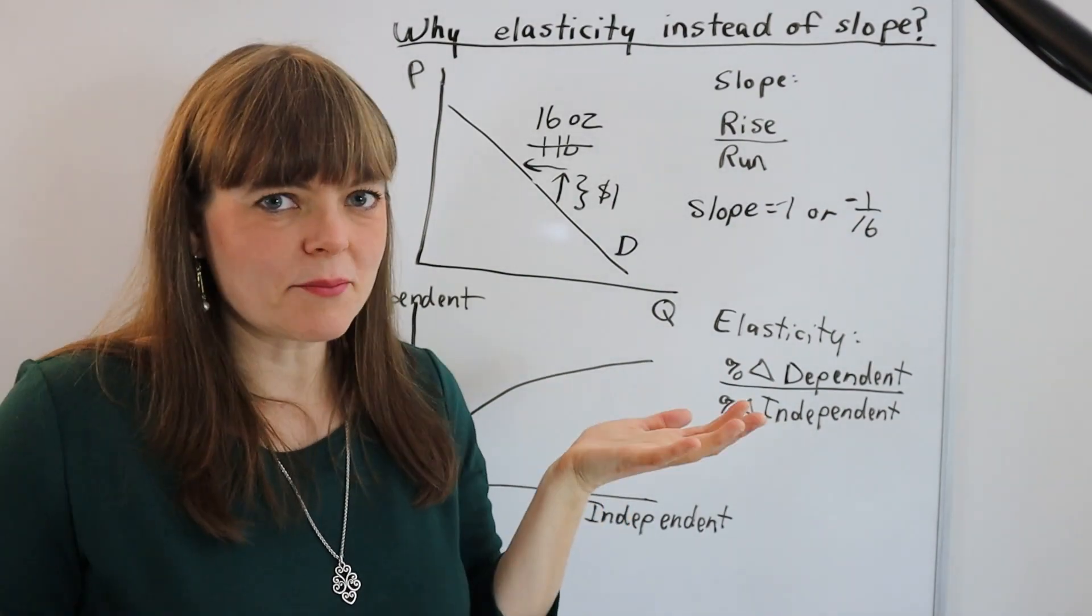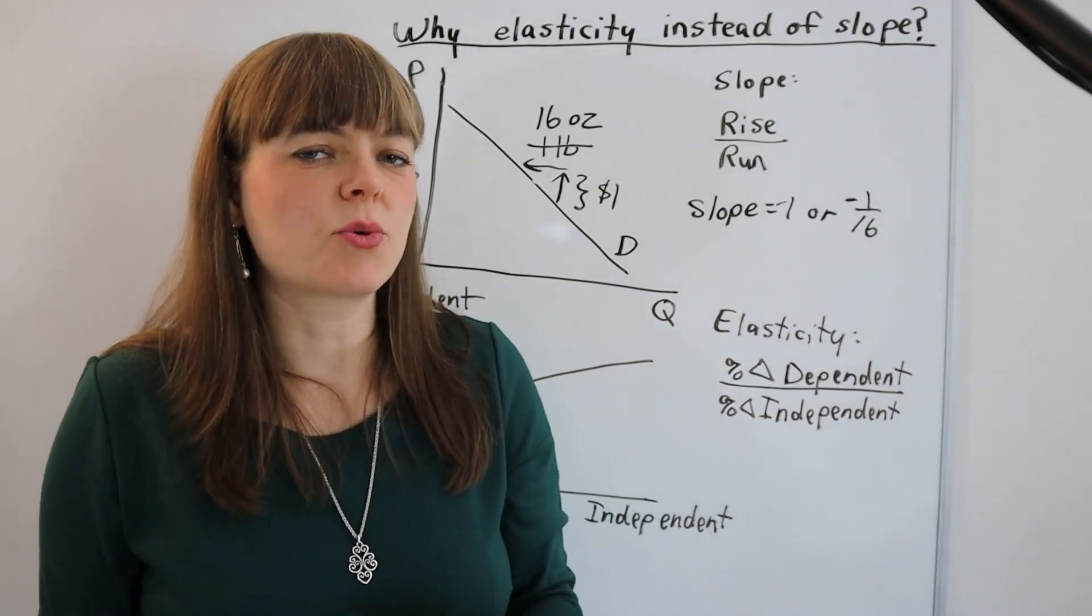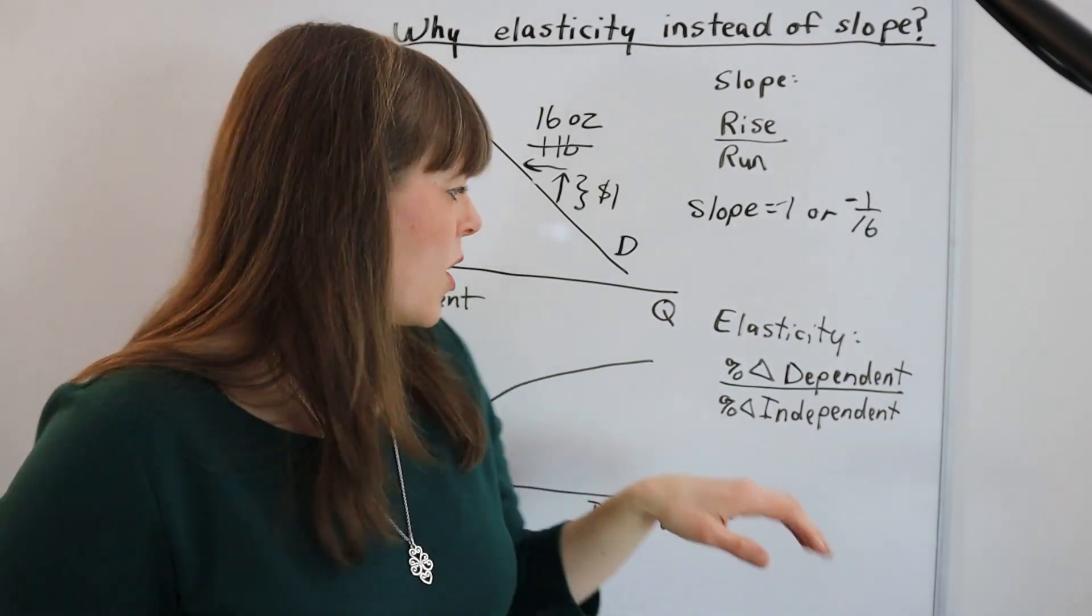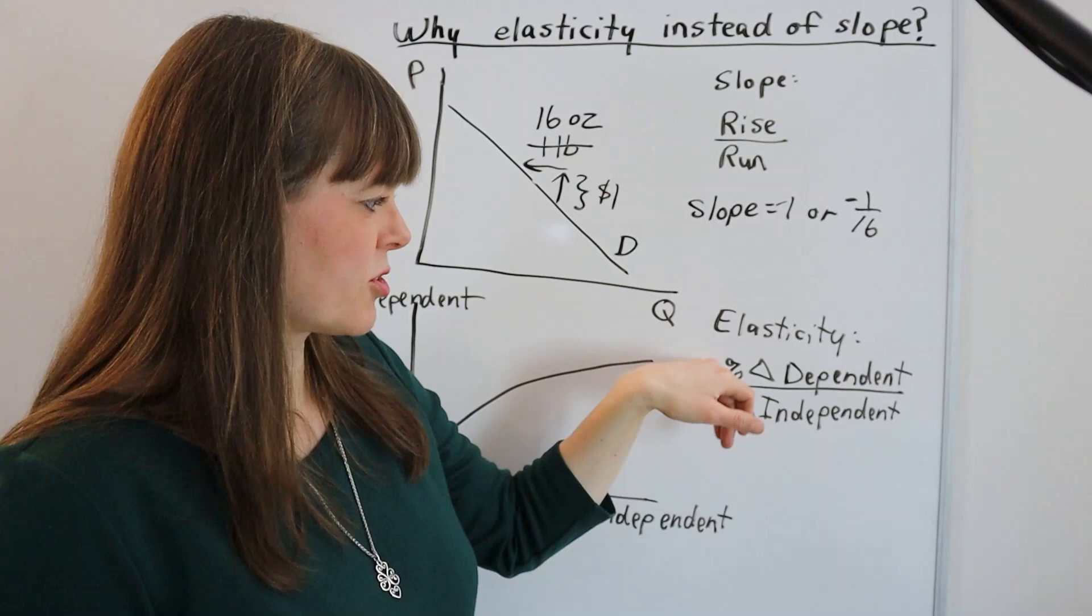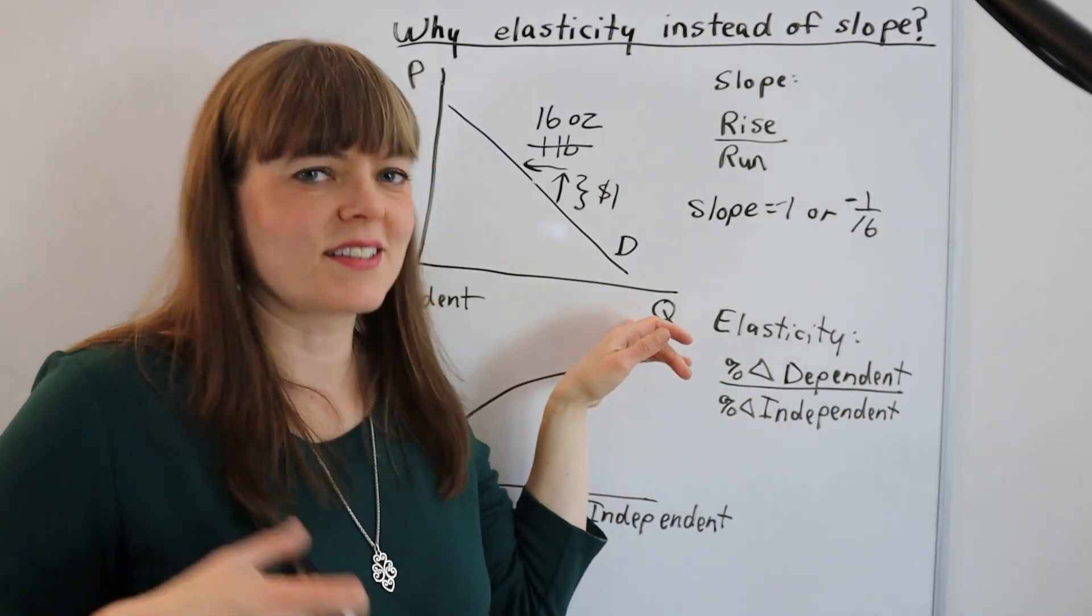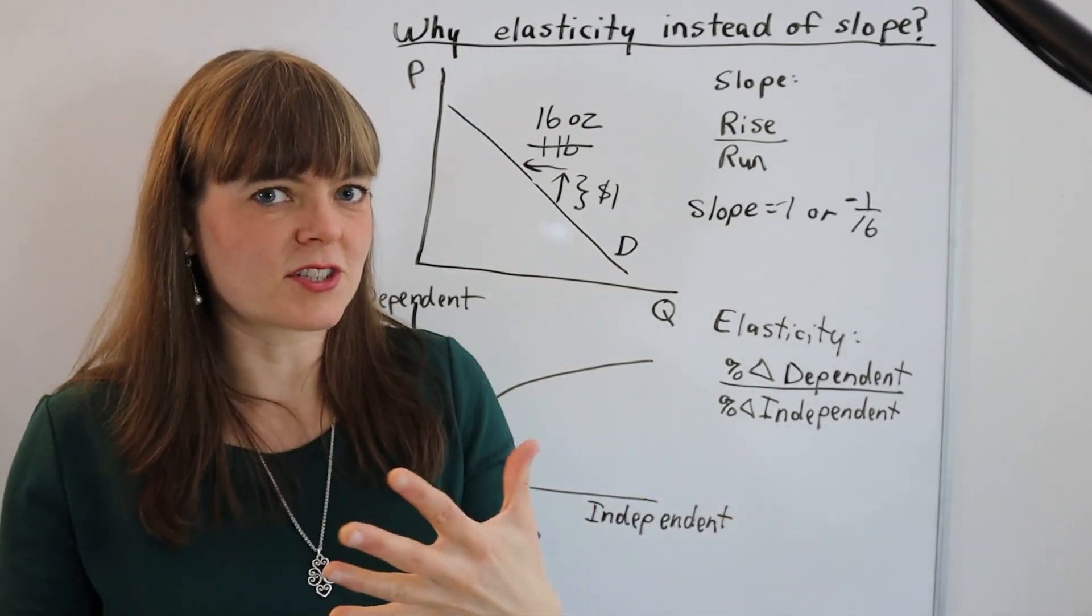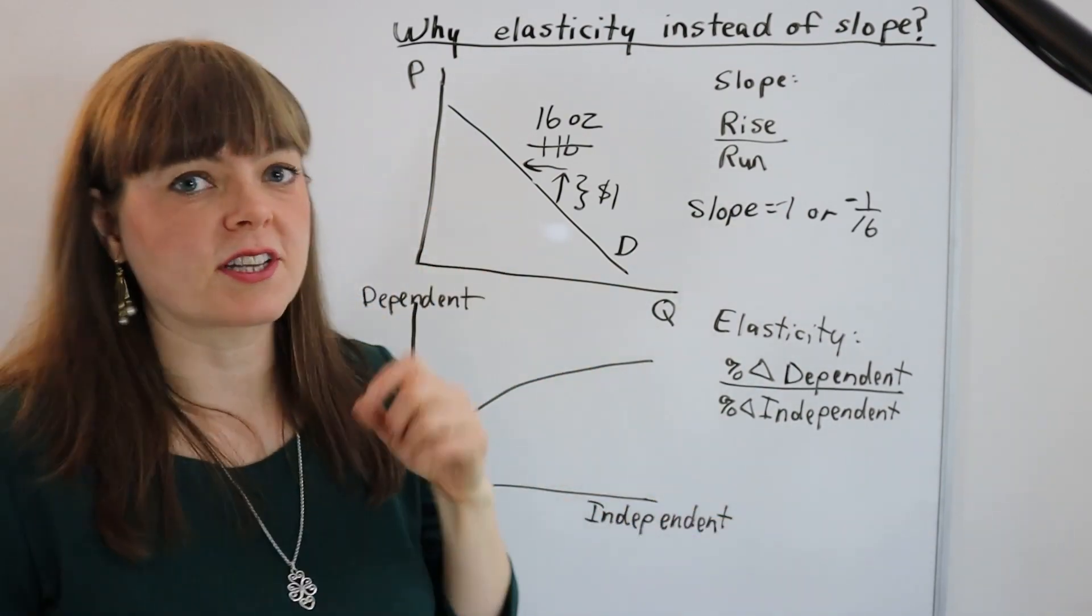And that's something that economists don't really like because it means it's highly situationally dependent. Whereas with elasticity, it's percent change in dependent variable, which up here, the quantity someone purchases is dependent, and that's divided by the percent change in independent variable, percent change in the price.